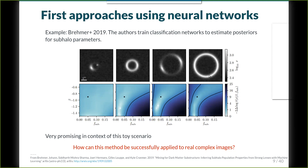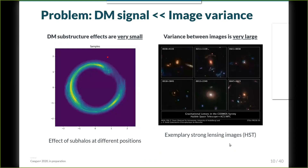What Brehmer et al. basically do is generate mock images — relatively simple toy images where the background source and main lens are simple — concentrating purely on the statistical problem. They generate different images with randomized substructure, then train a network to recognize substructure in these images and reconstruct the parameters that describe the substructure: the amount of substructure and the slope, which corresponds to how much larger subhalos you have compared to smaller ones. They clearly show that you can train neural networks for parameter regression and estimating posteriors in this context.